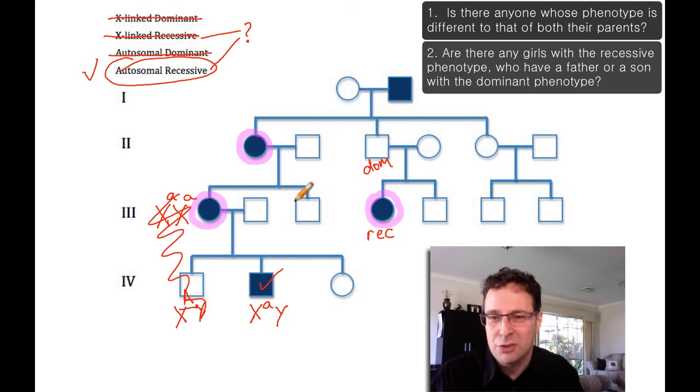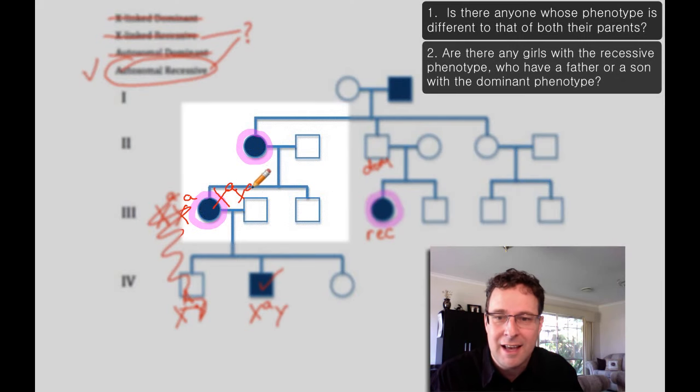Similarly, if we were to look at a girl, this girl here, again, her genotype would have to be little a, little a. She couldn't have a father like this either because she gets an X-chromosome, obviously from each parent.